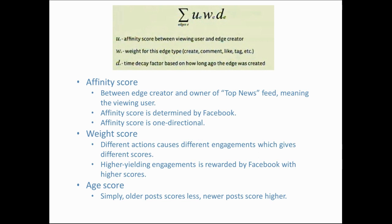The weight score is different. Different actions cause different types of engagement and therefore different scores. For instance, a post with a simple text message causes fewer clicks, likes, and comments than a post containing a link or a photo, which in turn causes less engagement than a post with a video. Because engagement is a good thing, Facebook rewards posts with higher-yielding engagement with a heavier or higher weight. Finally, the time decay score is really simple: the older the post, the lower the score; the newer the post, the higher the score.